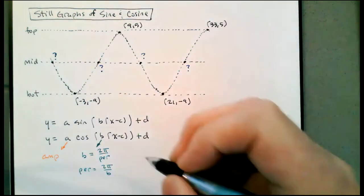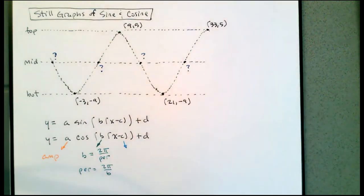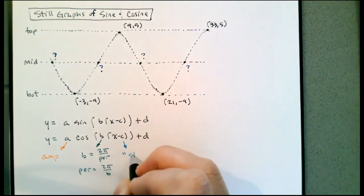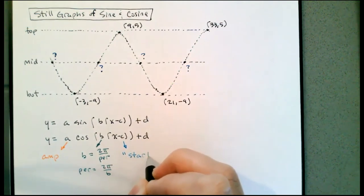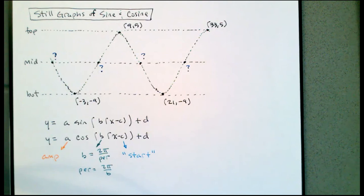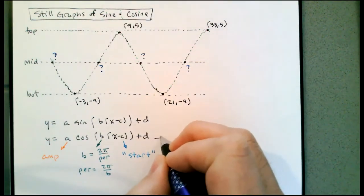C is what we've been calling the start — even though the graph goes on forever in both directions, it's just where we think the graph starts. This will change depending on whether we choose the top, the bottom, the middle going up, or the middle going down. Specifically it's the x-coordinate of what we choose to be the start. And then D is the middle.